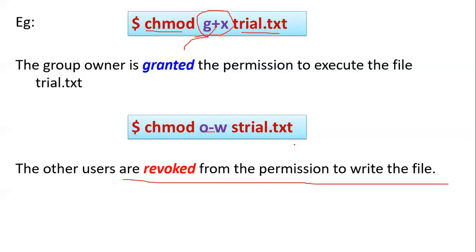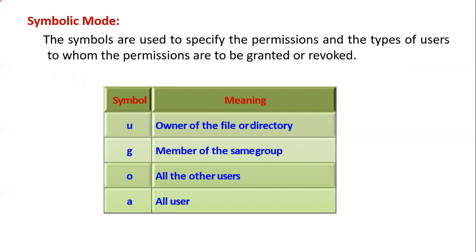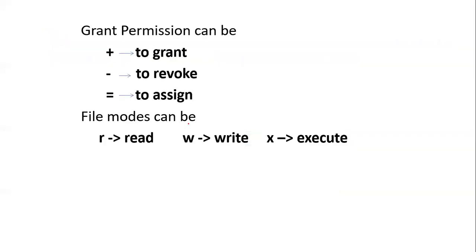A stands for all users — g is group owner, and a stands for all users. So in symbolic mode: u means owner, g means member of the group, o means other users, and a means all users. Plus is to grant permission, minus is to revoke permission, and equal is to assign a file mode. Permissions are read, write, and execute.